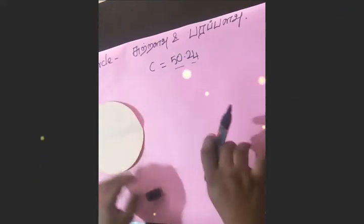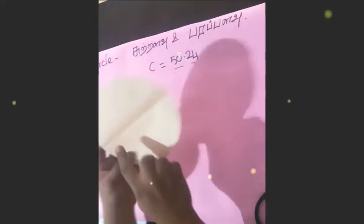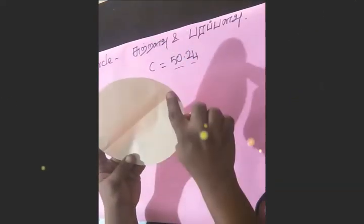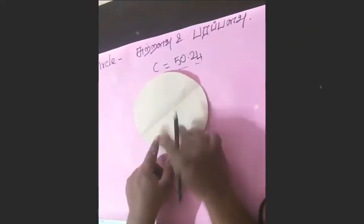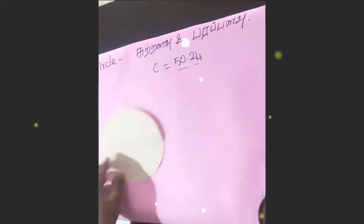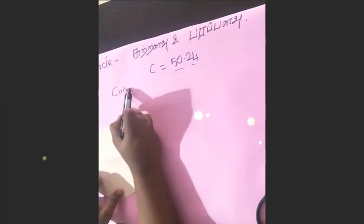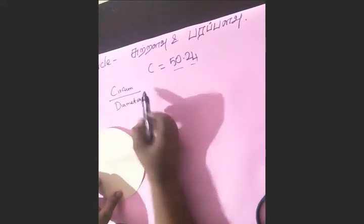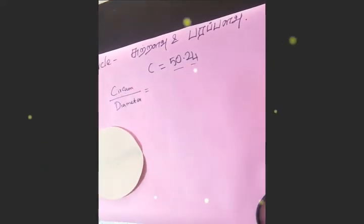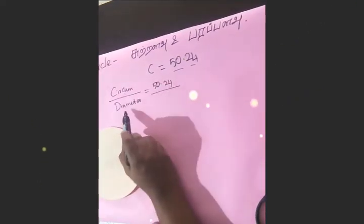For example, we can take a circle. We can take a diameter as the height. If we take a diameter, we can divide the circumference by it. The diameter is 16 cm. So 50.24 divided by 16 gives us the answer 3.14.